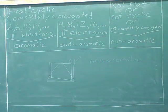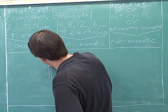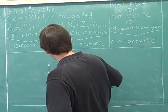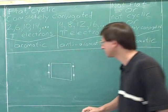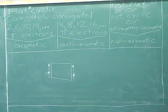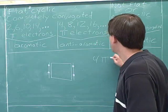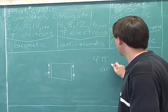What category does this molecule fall into? There are two electrons in this pi bond and two electrons in this pi bond, giving us four pi electrons total. That puts us in the anti-aromatic category.